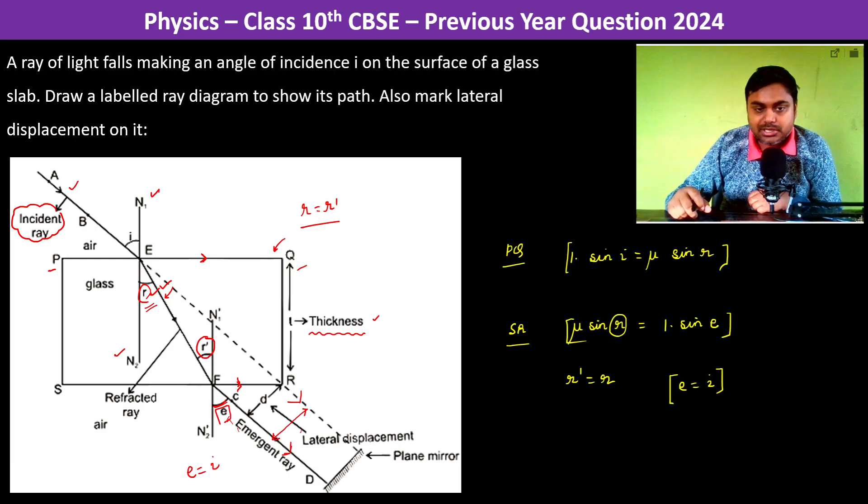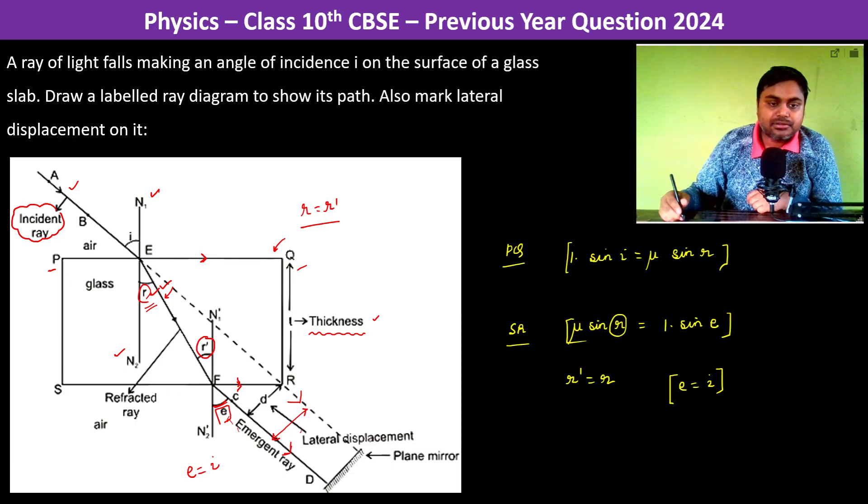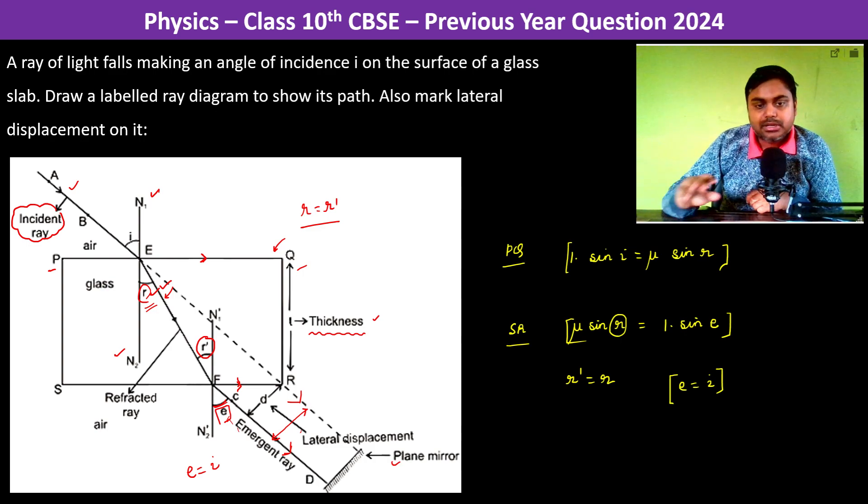And the distance between them, that is the lateral displacement which is d. Of course here you know the mirror is there and then it will retrace its path, that's fine, but the point is this.